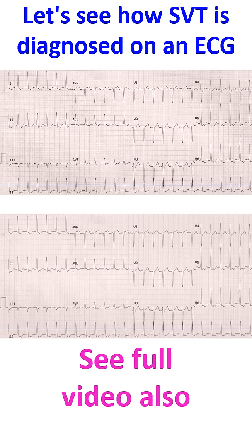One look at this ECG will tell you that this is a tachycardia ECG. But before that we will have a look at this standardization pulse. In the earlier ECGs the standardization pulse was not easily seen. Here you have a very good standardization pulse — 10 millimeter to a millivolt. A square wave is seen here.